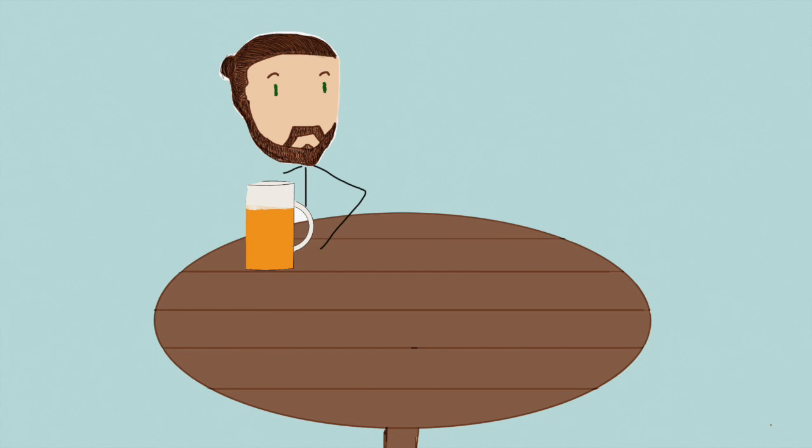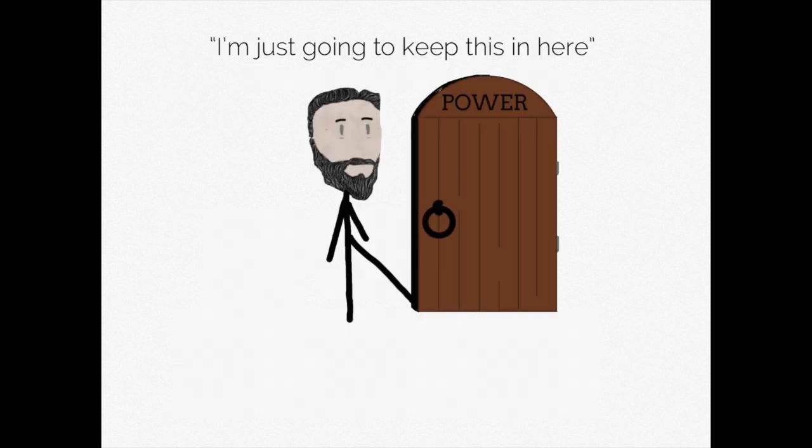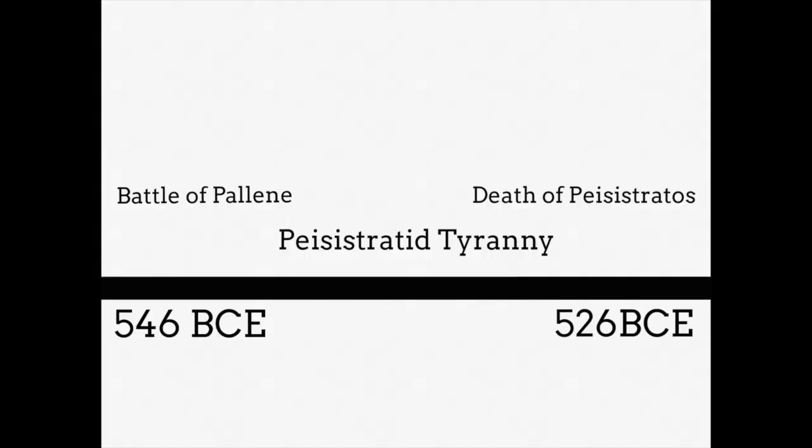But Pisistratus still didn't take any chances. His sons and a group of young and loyal aristocrats they surrounded themselves always had at least one of the Archonships, meaning that the tyranny always had one foot in the door of official power. This mix of strategies kept Pisistratus in power for around two decades, until finally dying of natural causes in 526.